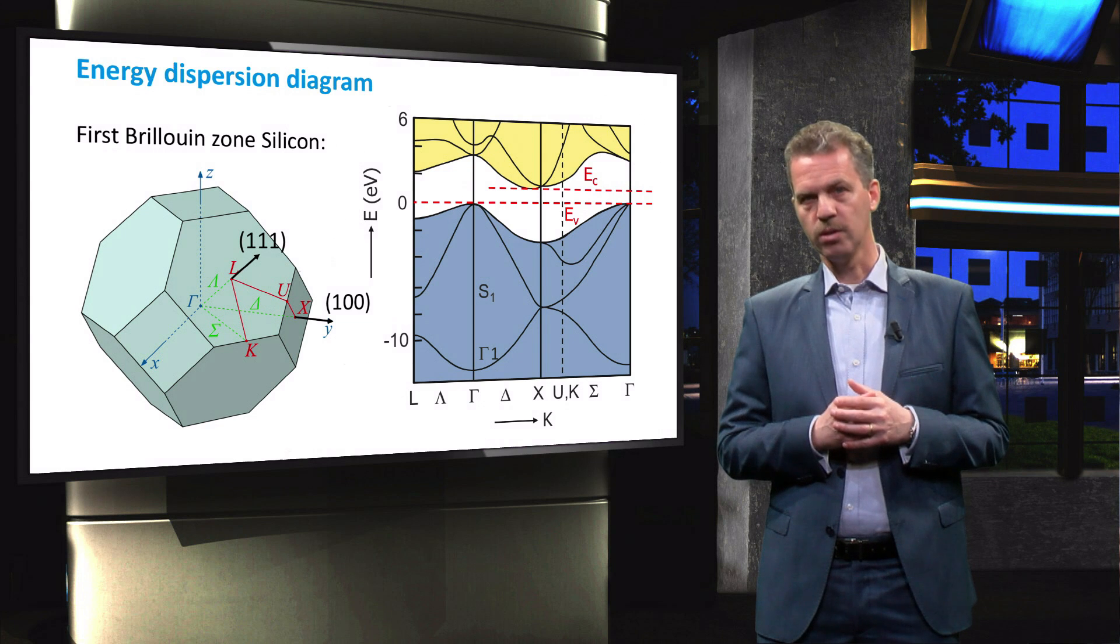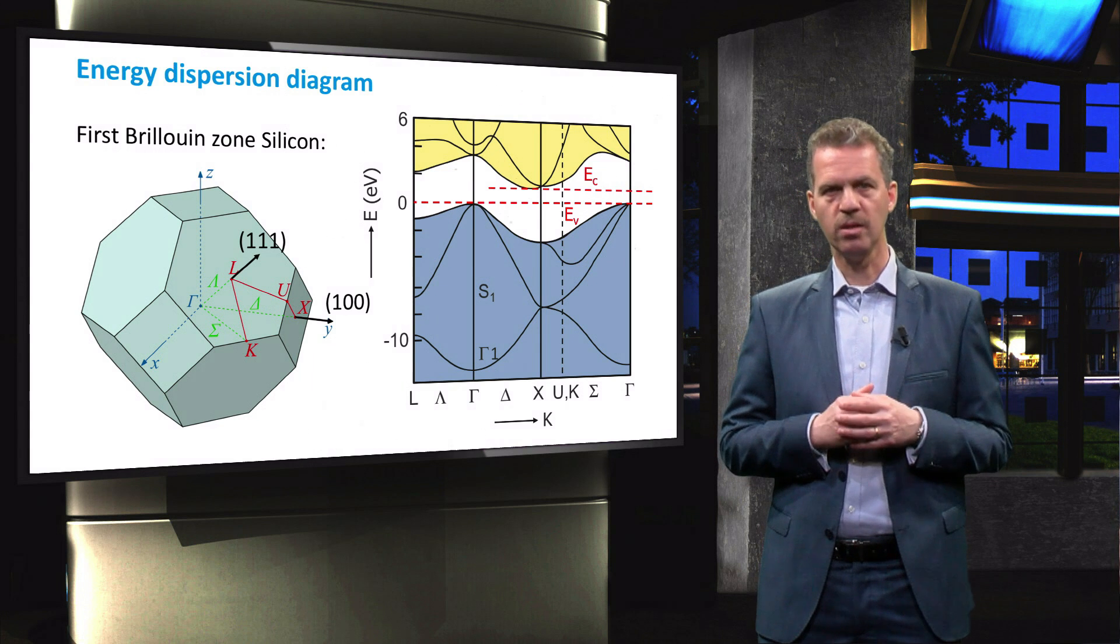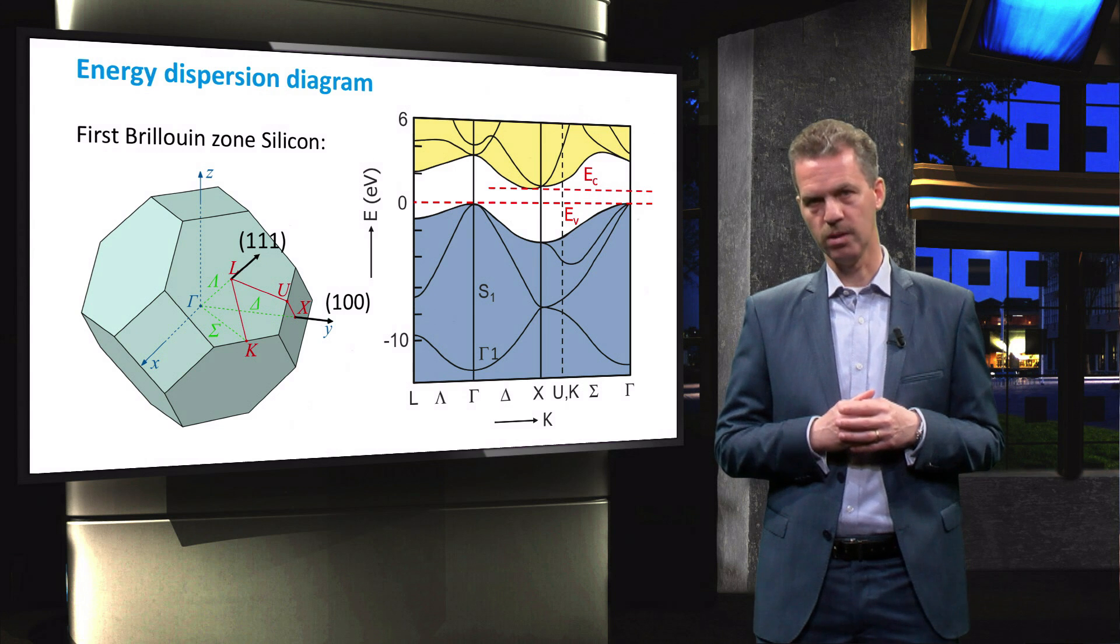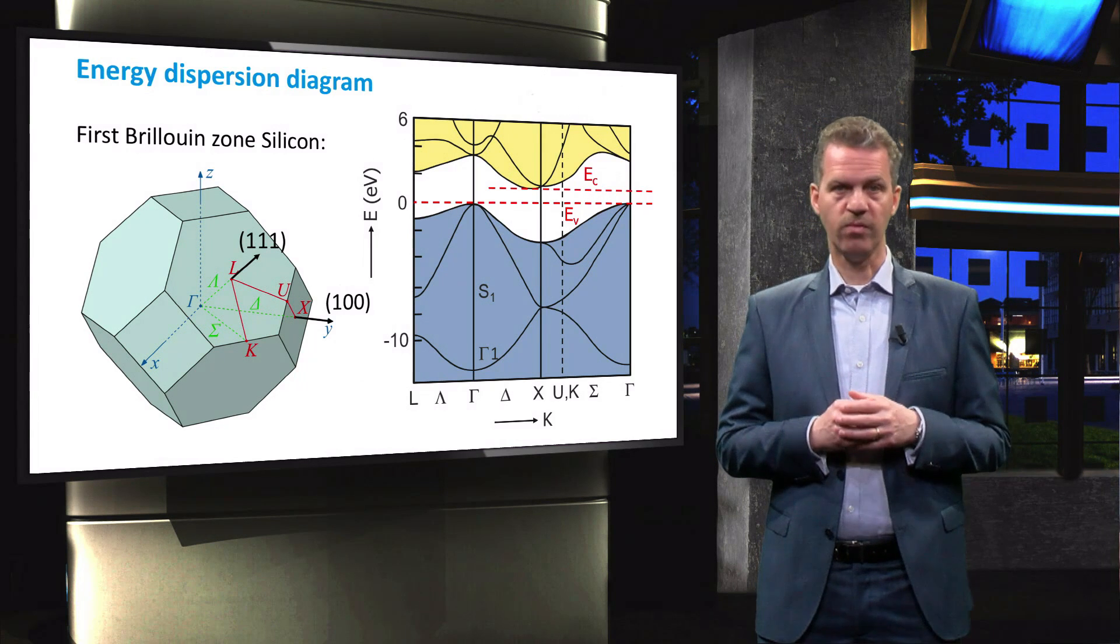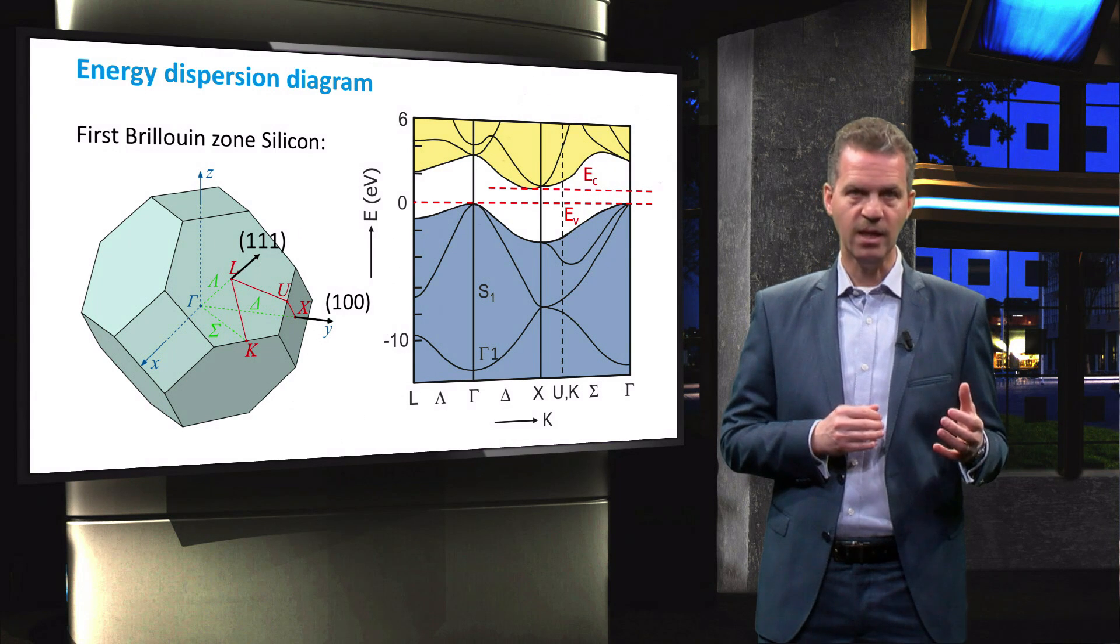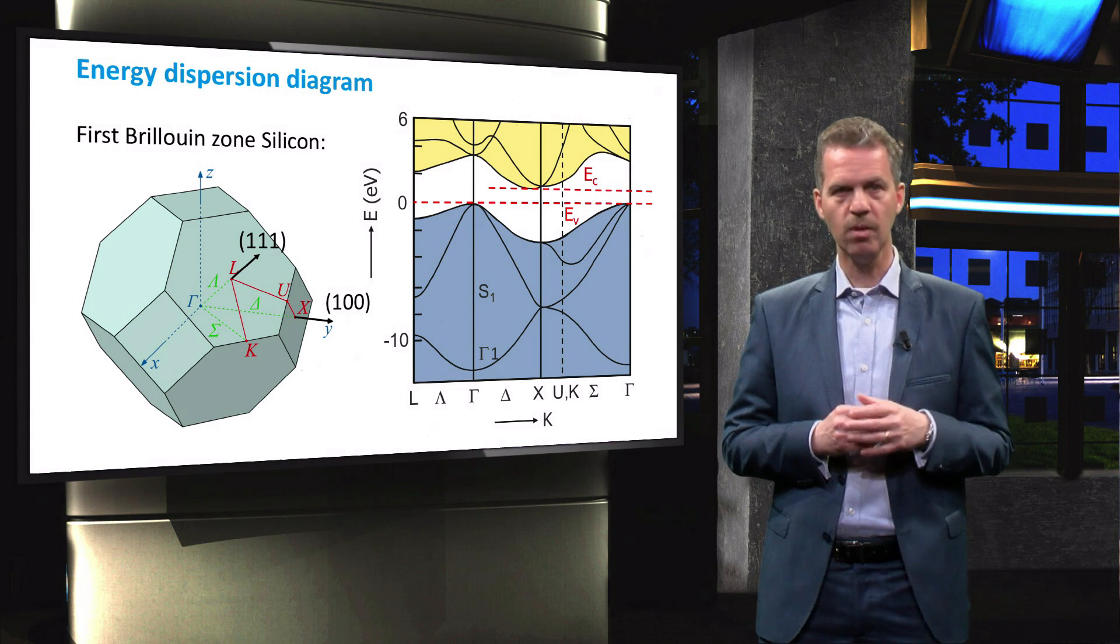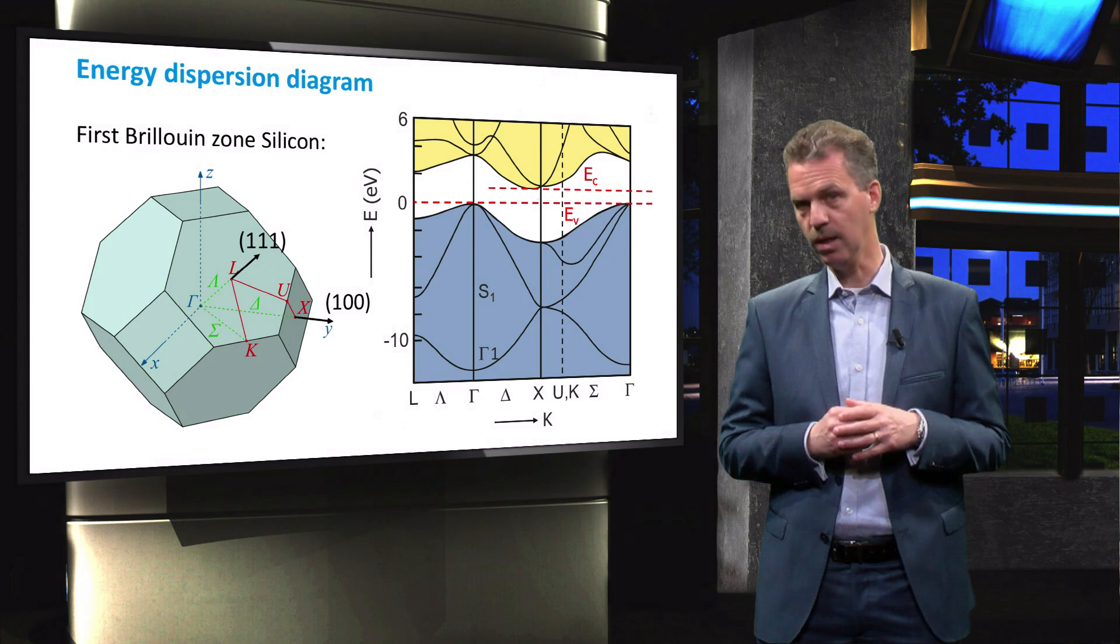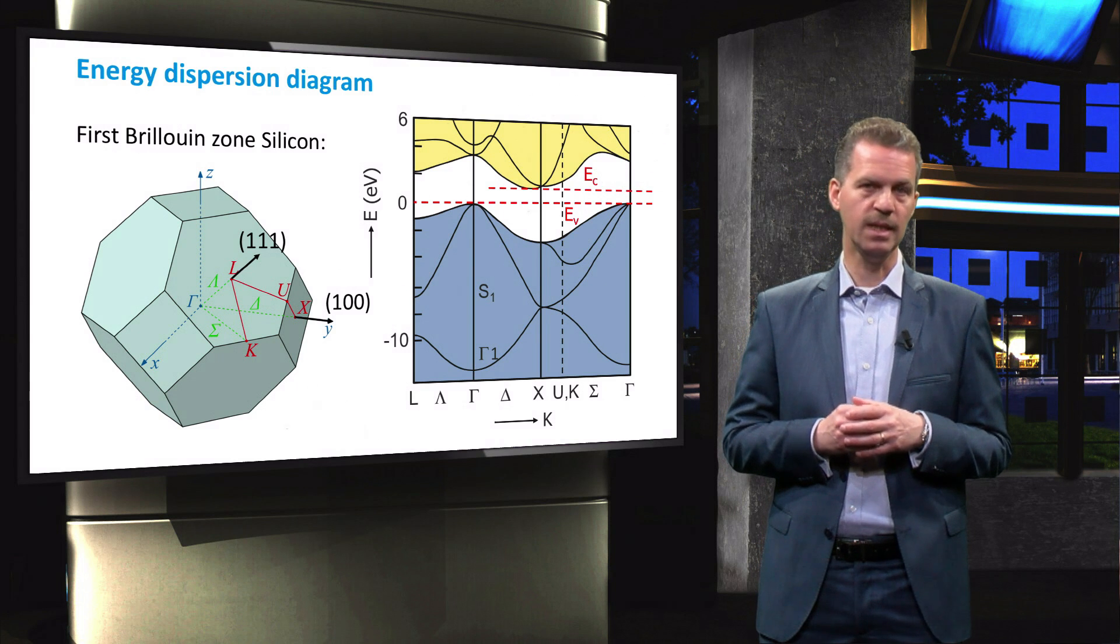Solving the Bloch wave functions, an energy dispersion diagram for silicon is obtained as shown on the right. The band gap of the material, here in white, can be defined as the energy difference between the maximum of the valence band EV and the minimum of the conduction band EC. However, when we take a closer look, these are not located at the same point on the reciprocal lattice.